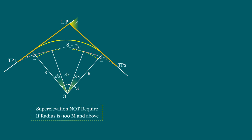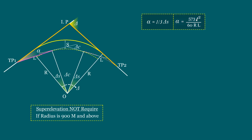So far we were deriving formulas for design purposes. From now, we are going to derive the formulas which will help in setting out of the transition curve. The tenth step is finding the value of alpha to find the location of the common tangent point. Alpha is the angle between the original tangent line to the common tangent point at tangent point 1. According to the characteristics of the true spiral, the value of alpha equals one-third of delta s. There is another formula: 573·ls²/(60·r·l), in degrees. Let us also calculate beta, which helps get the direction of the common tangent line. Beta is the angle between the common tangent line to tangent point 1 and the common tangent point; beta equals two-thirds of delta s, or equals two alpha.